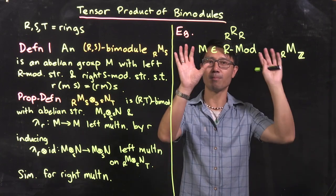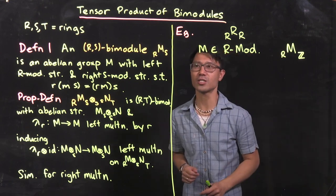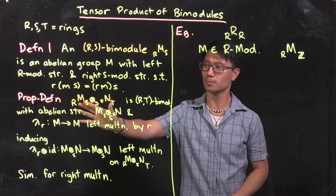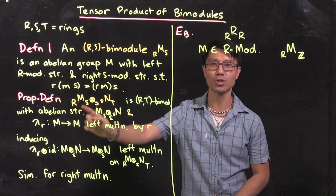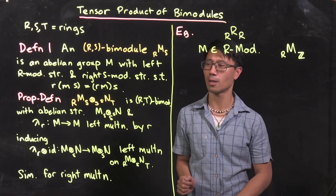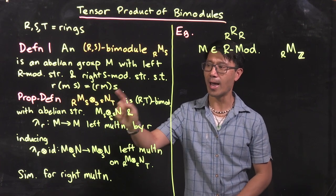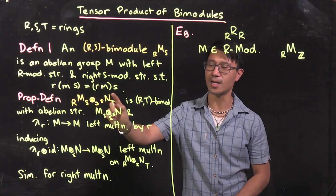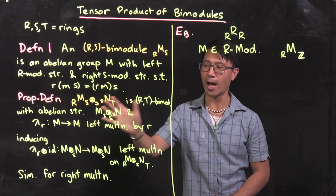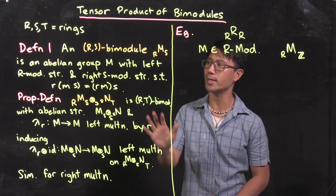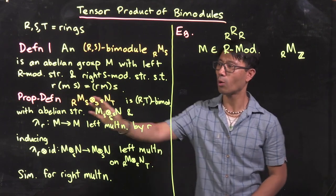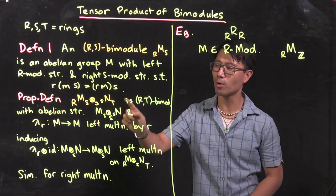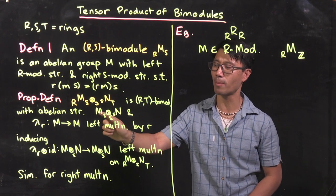Now we're going to take the tensor product of bimodules. We have an R,S-bimodule M and an S,T-bimodule N. Note that M is a right S module and N is a left S module. What we're going to get out of this is an R,T-bimodule. If we forget the left R multiplication on M, it's just a right S module, and forgetting the right T multiplication on N gives just a left S module. We denote these by M_S and _SN and take their tensor product to get an abelian group.